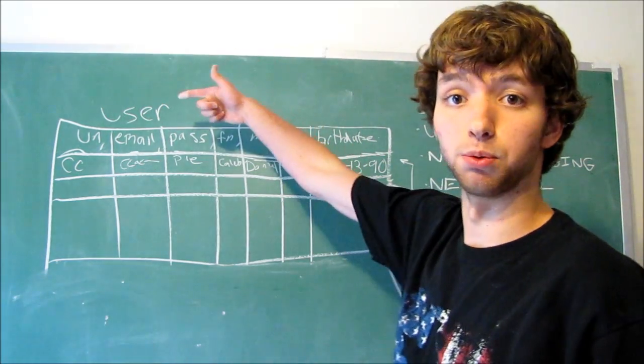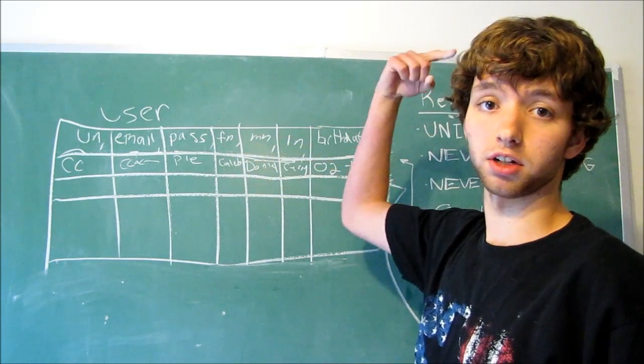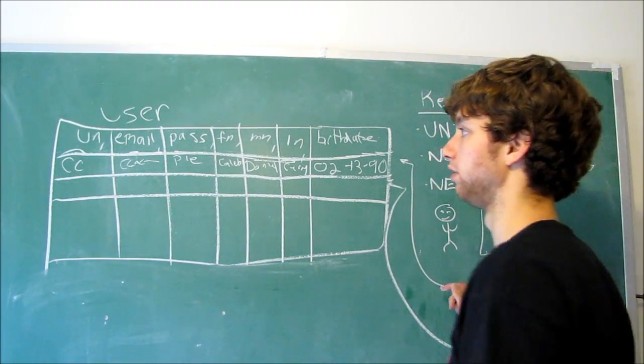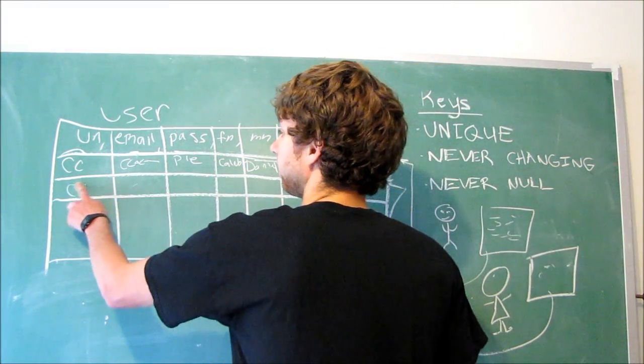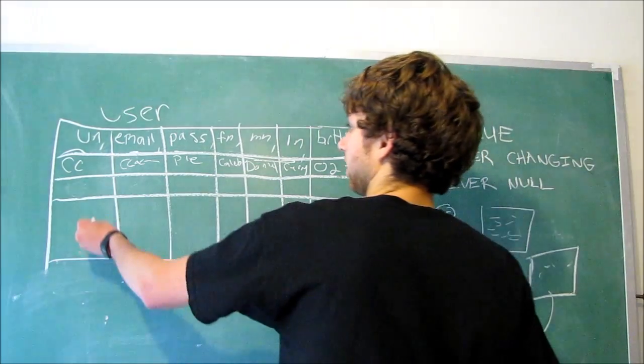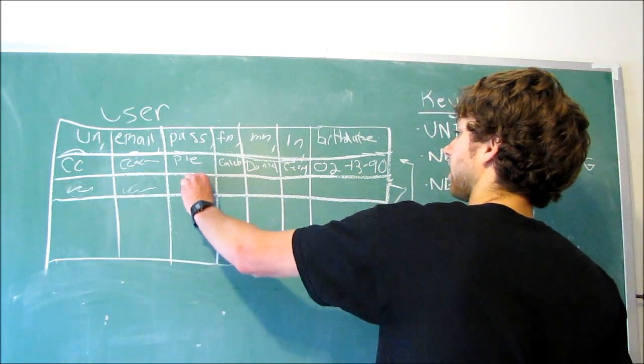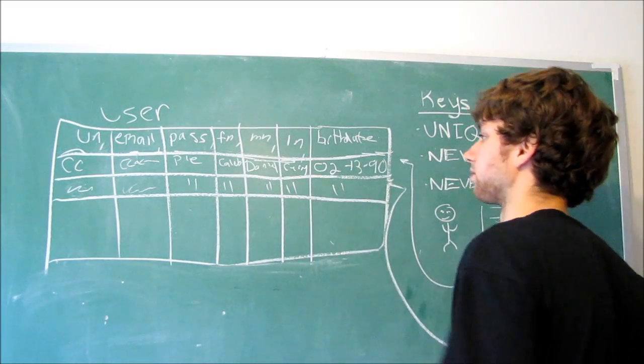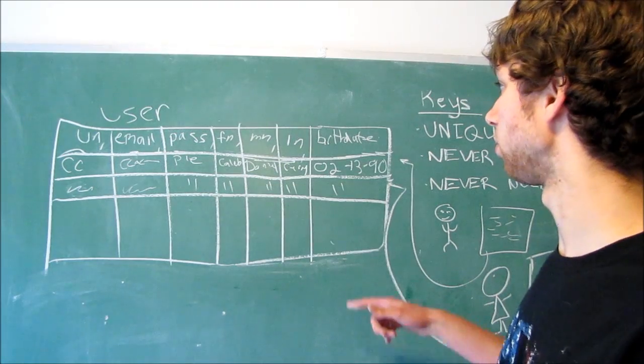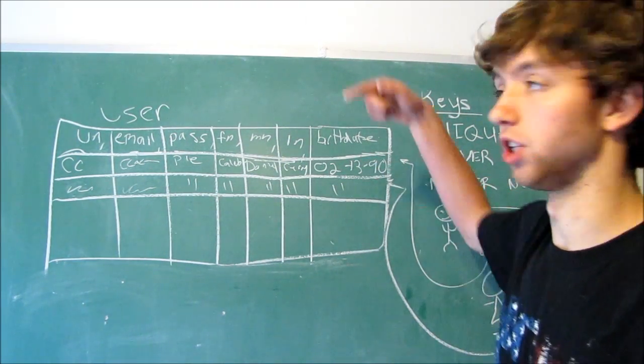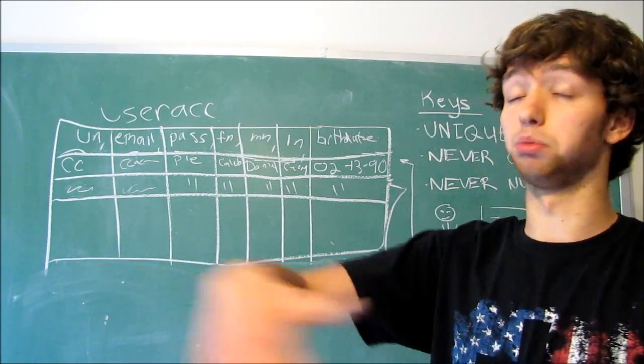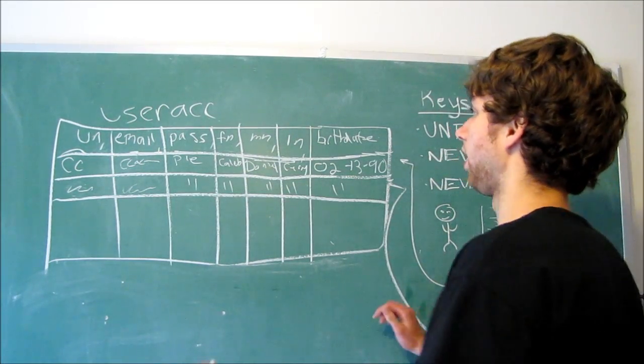How do we know that every single row is talking about only one user? And every user only has one row, the rule of one. Now we don't want Caleb to be able to come in here, create a new account, and make his username CC and all the same stuff again. In some instances, we may be able to allow them to make more than one account. I could have a different username, different email, same password, same first name, middle name, last name, and birth date. The only thing that changed is username and email.